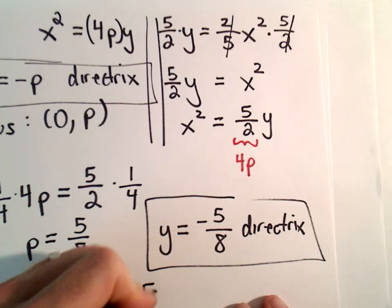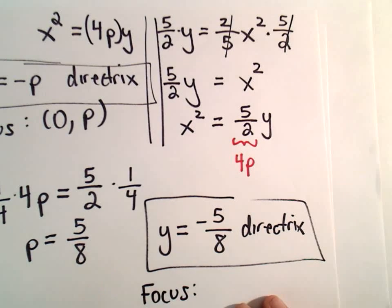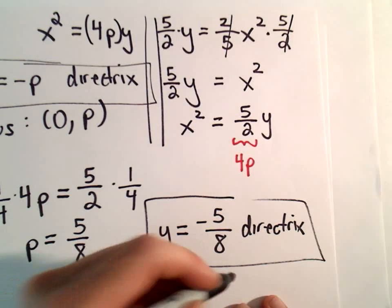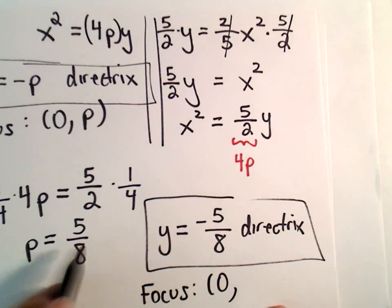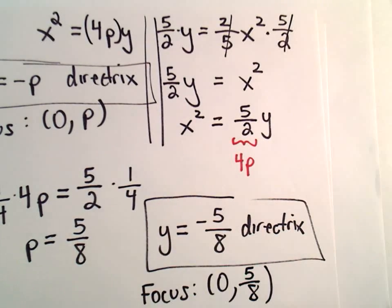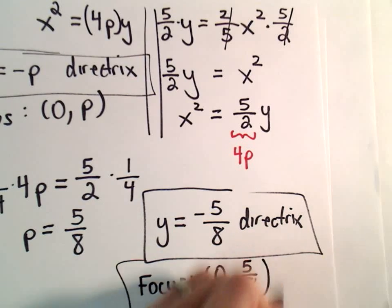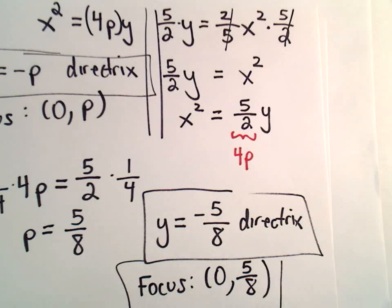And then it says our focus for this parabola will be 0, p or 0, 5 eighths. So now we've got our solutions. So technically we're done,